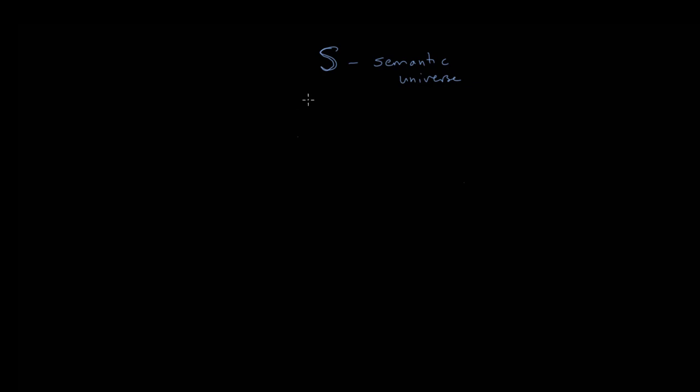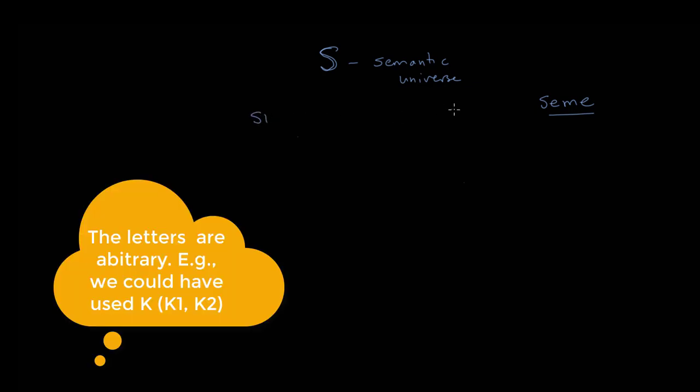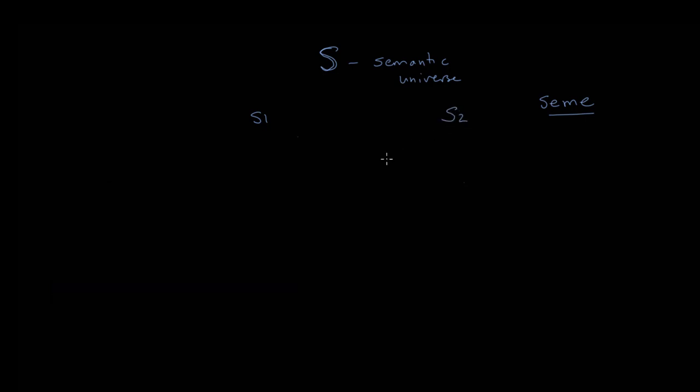So we're going to talk about smaller units of meaning then within this semantic universe, and the term for a smaller unit of meaning is a seme. Think of a seme as something like a molecule or an atom. It's a small unit of meaning within this semantic universe. So we'll have two semes here, and these are contrasting semes. So we have S1 and S2. And what you typically do with a Greimas square is you start with a binary opposition, so a binary opposition.